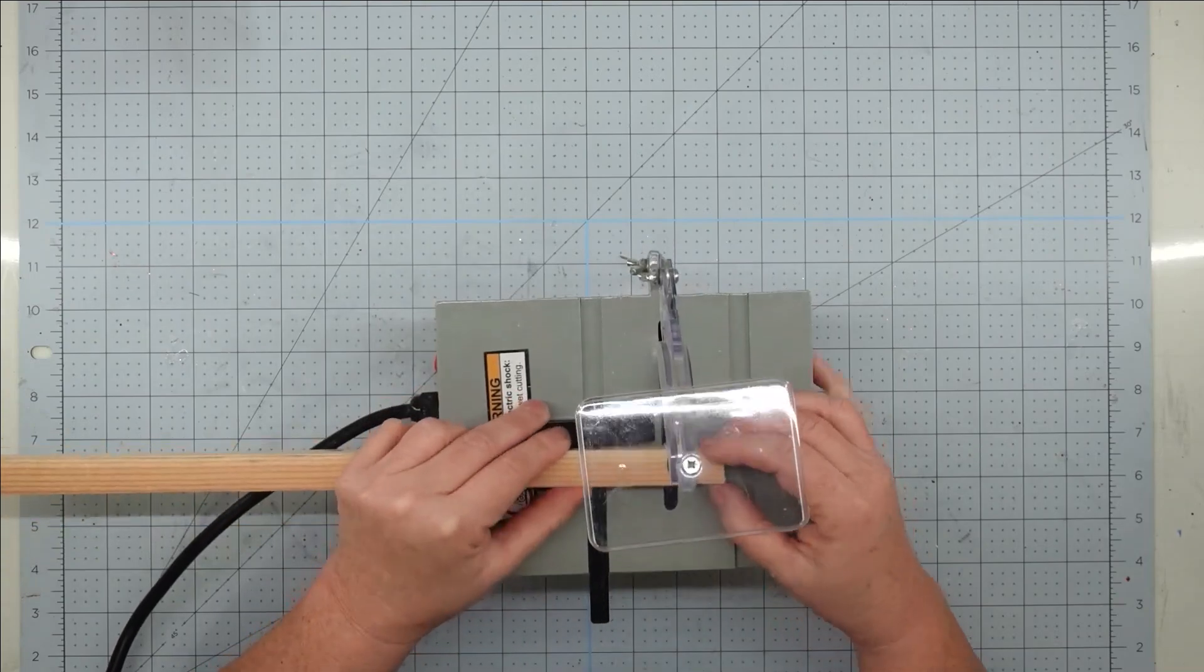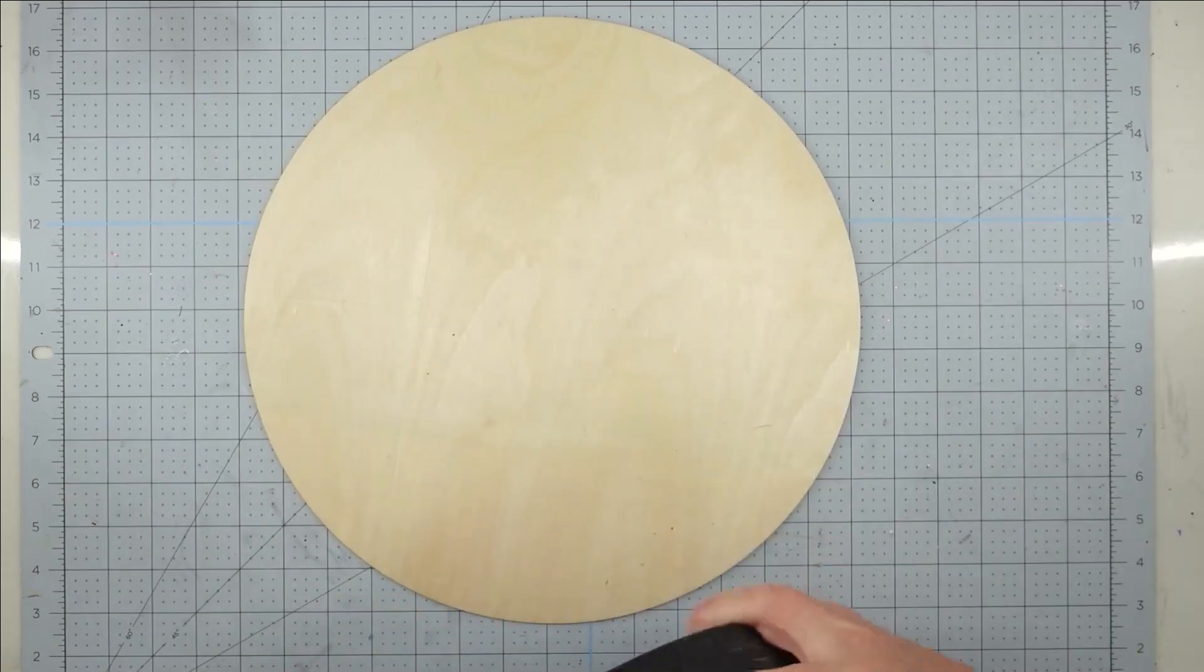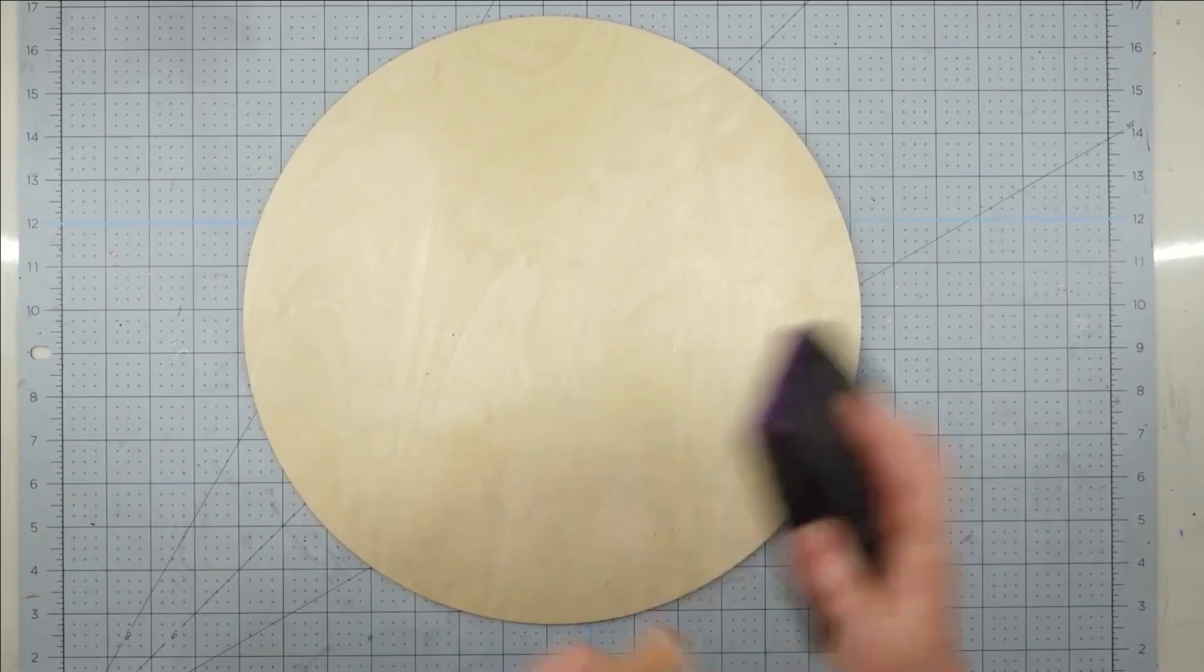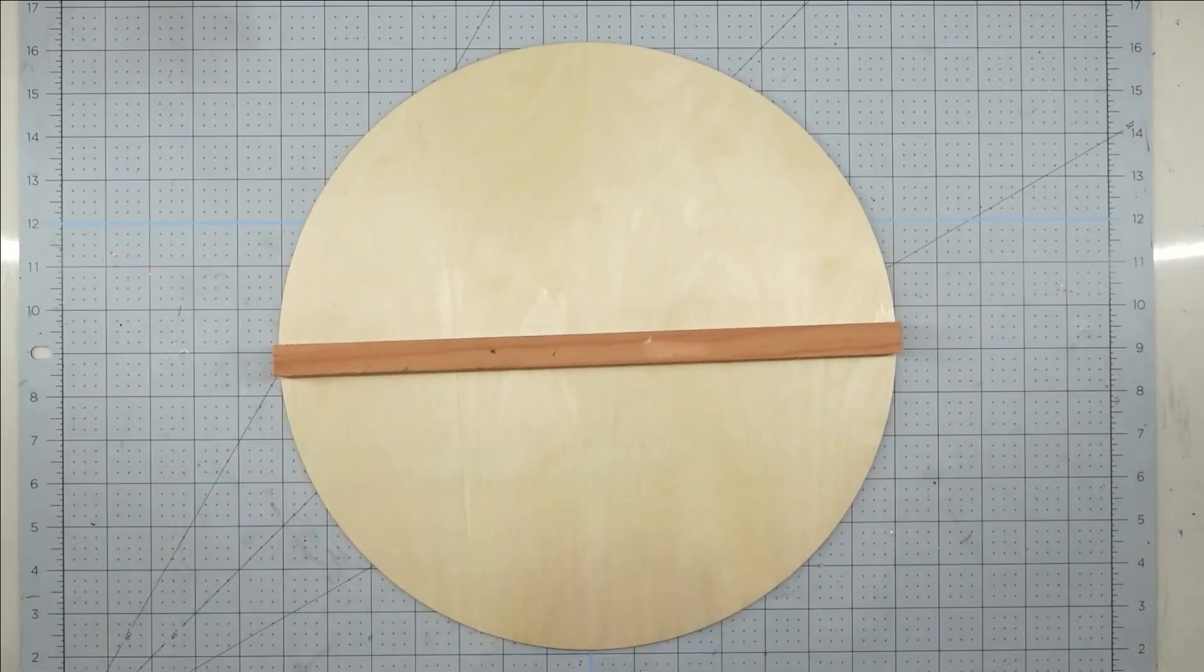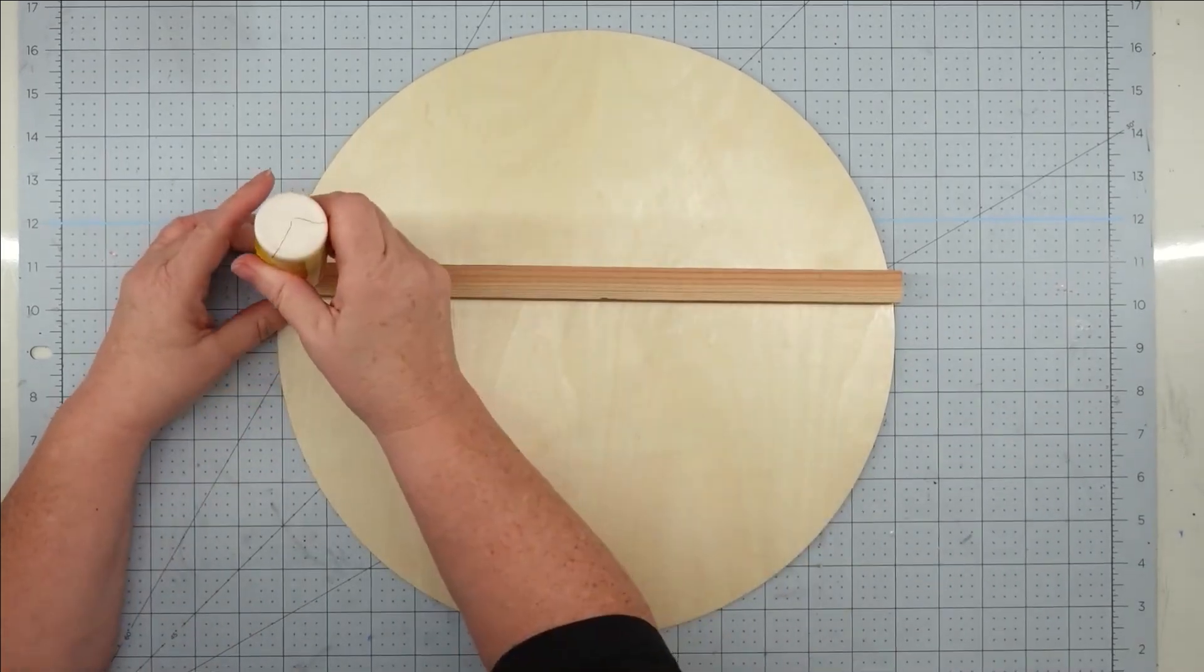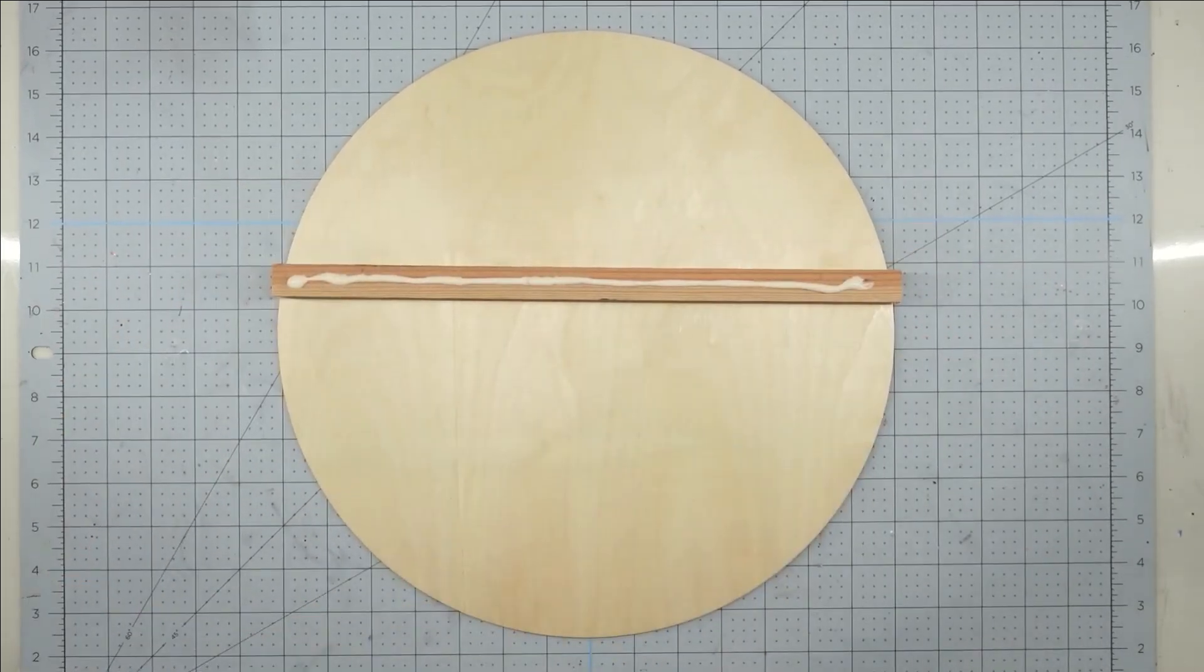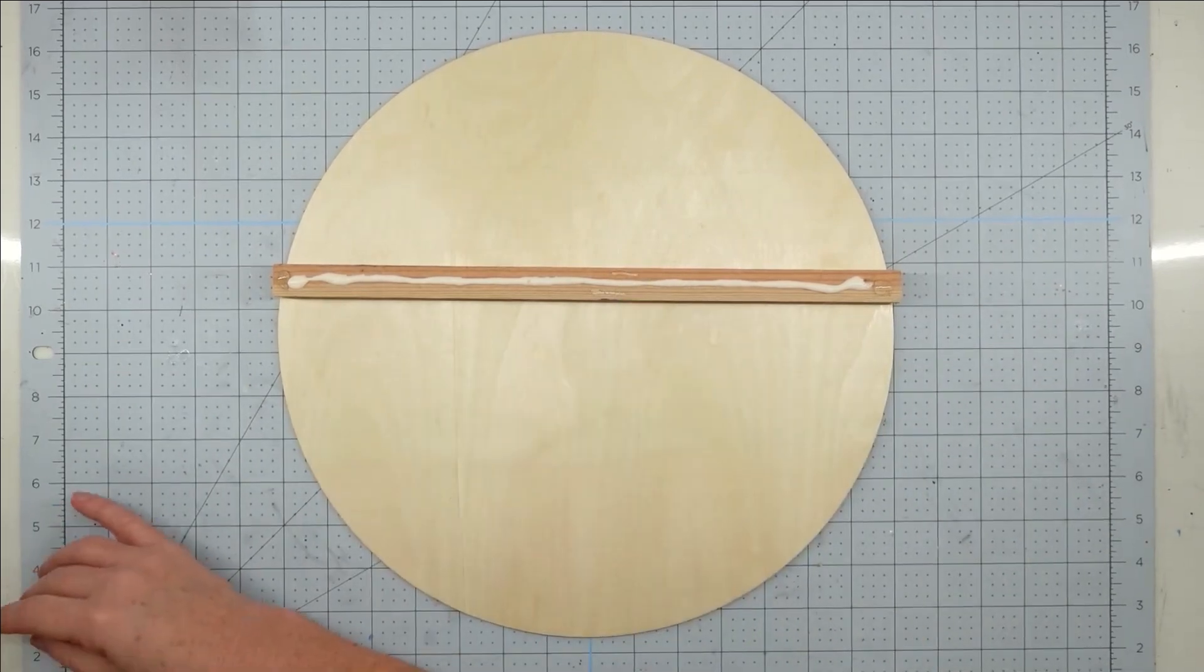Now we get a lot of questions about this table saw, so I will put a link to it down below. I'm going to use my sanding block and just take off the splinters on the end, and then I'm going to attach it about midway down my plywood round. I'm going to use some wood glue to make sure I get that strong hold, and I'll use a little bit of hot glue to hold it until my wood glue sets.